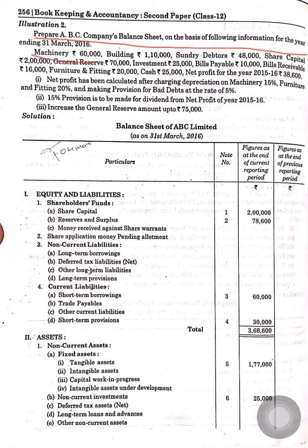Machinery 60,000 — machinery will be written under fixed assets, i.e., non-current assets. Building will also be written under non-current assets fixed assets. Then we have current liabilities, current assets, share capital under equity and liabilities, shareholders' fund, general reserve under reserve and surplus, investments as non-current investments, bills payable under current liabilities, bills receivable as current assets, furniture and fittings under tangible fixed assets, and cash as cash and cash equivalents.